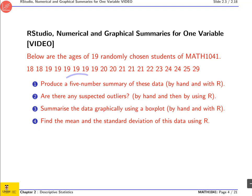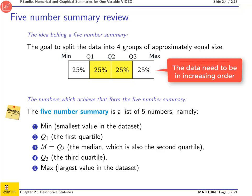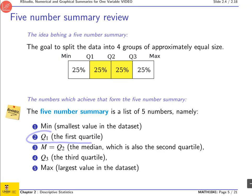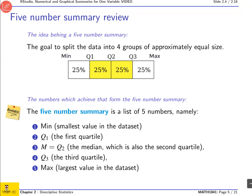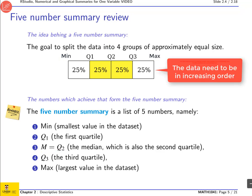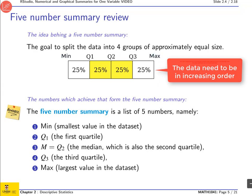The first question asks us to produce a five-number summary of this data. So what's a five-number summary? The idea is that you're trying to split your data into four groups of approximately equal size. The numbers which achieve that form the five-number summary because it's actually a list of five numbers. The first one is the minimum value in your data set. The second one is called Q1, the first quartile, and a quarter of the data are smaller than Q1. Q2 is the median, which splits your data into basically 50% on one side and 50% on the other. Then there's the third quartile where three quarters of the data are below it, and finally the maximum value.